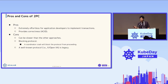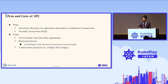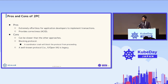2PC also has pros and cons. The pros: it's extremely simple and effortless for application developers to implement transactions, and it provides strong correctness — specifically ACID. The cons: it can be slower than other approaches because of global coordination and resource locking. It's also a blocking protocol — if the coordinator crashes, that blocks transactions from proceeding. There are not many well-known implementations, and the well-known protocol XA (xOpen XA) is pretty legacy.